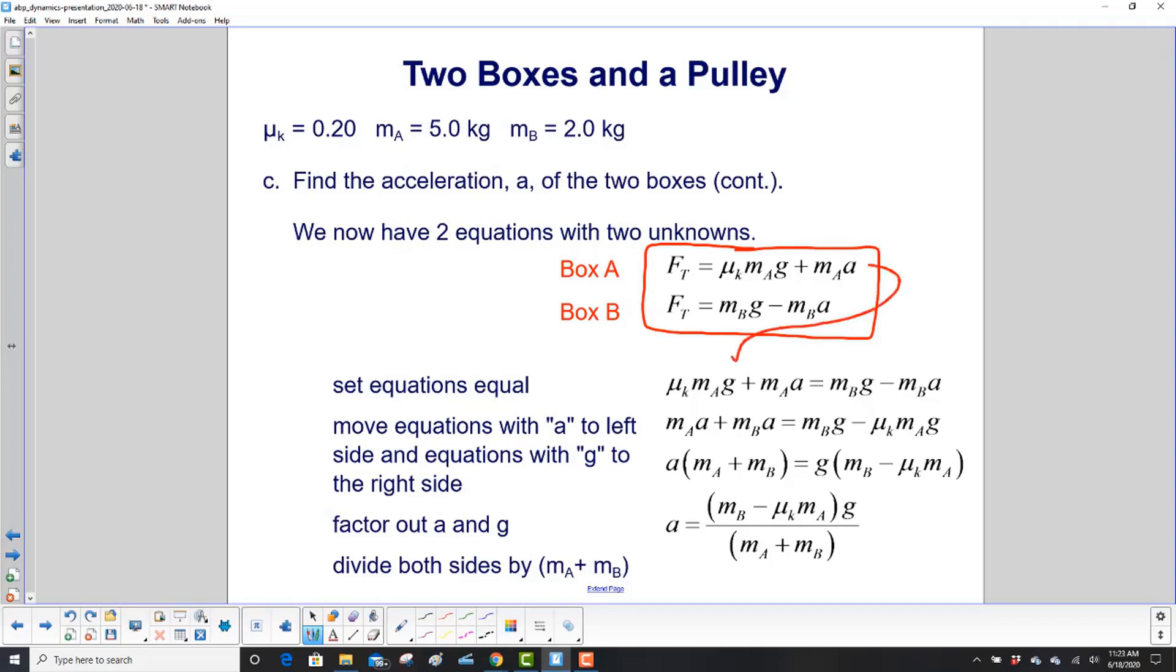So here's the box A equation over here. And here is the box B equation. We set them equal. First thing we're going to do is move all the components of this that have A to the left side